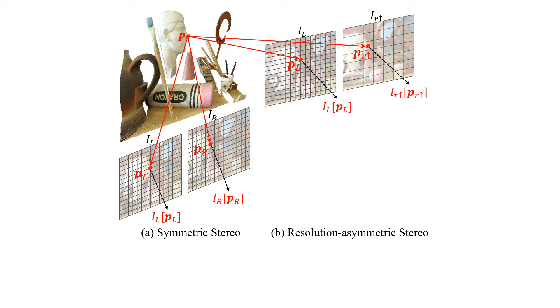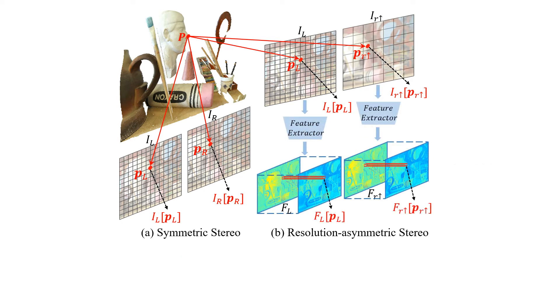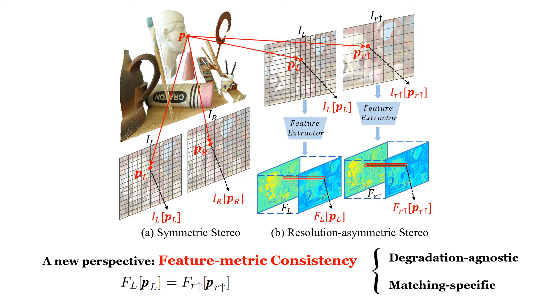Given the results above, we propose to conquer the challenge of asymmetric loss from a new perspective, feature metric consistency. To establish such consistency, a degradation-agnostic and matching-specific feature space is desirable, since a degradation-agnostic space could encourage correct alignments, while a matching-specific space could penalize incorrect matchings.